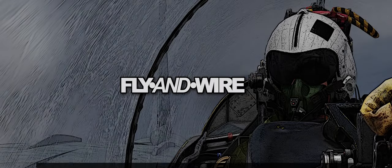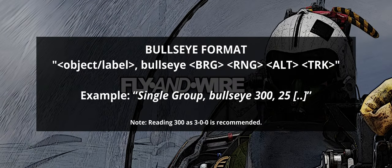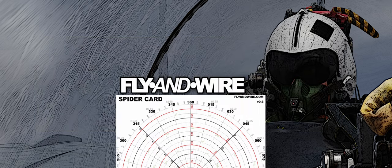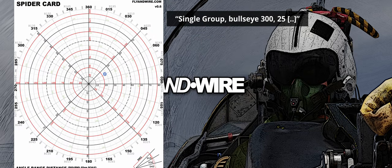Understanding the spider card: in DCS, the centre of the spider card commonly indicates the bullseye location. The controller or other agency can then broadcast the bullseye reference location of a radar contact — for example, omitting information not relevant to the discussion: single group, bullseye 300, 25. Our aircraft can then reference our position and determine the contact's location relative to us. This information can be used to determine whether the fighter should commit, whether the contact can be a threat, and so on.